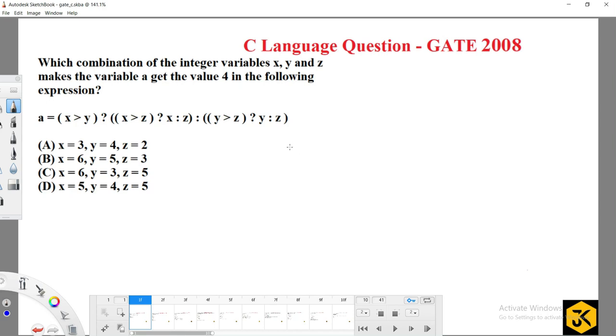Let's look at a GATE question from 2008. Which combination of the integer variables x, y, and z makes the variable a get the value 4 in the following expression? If you observe...